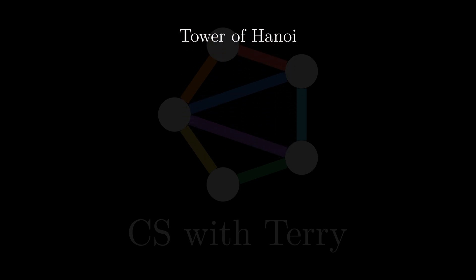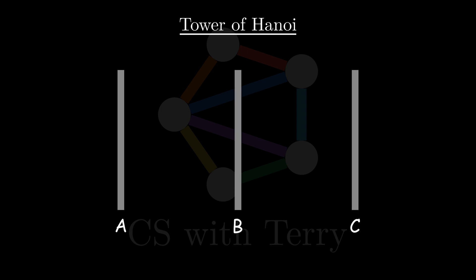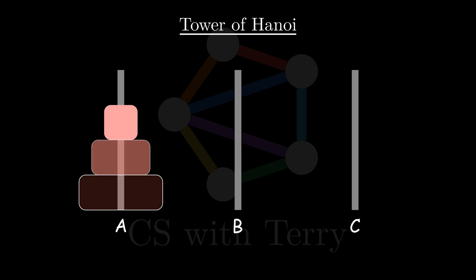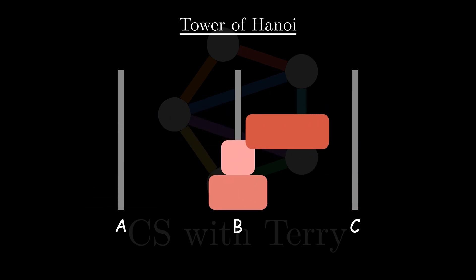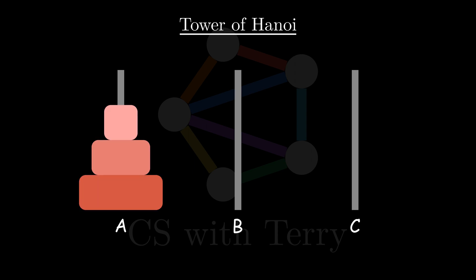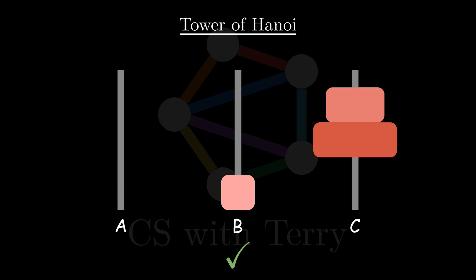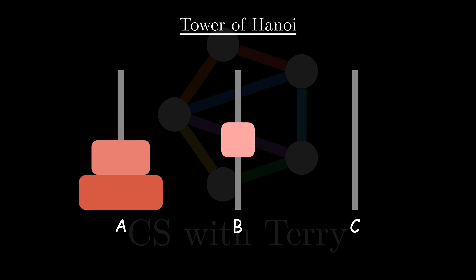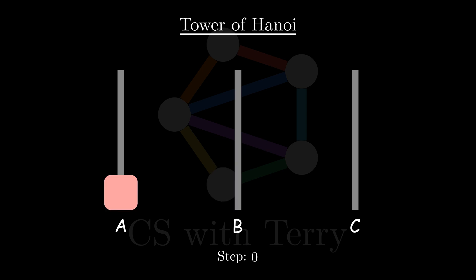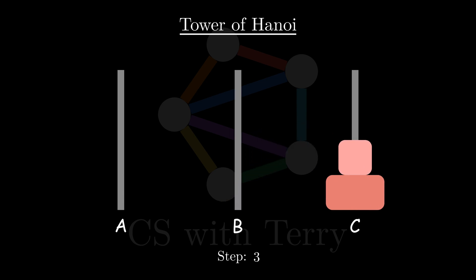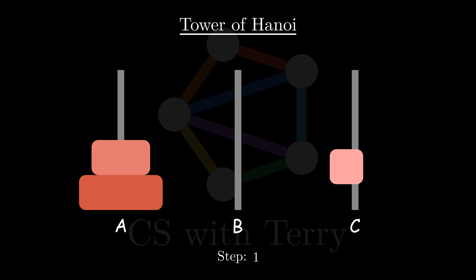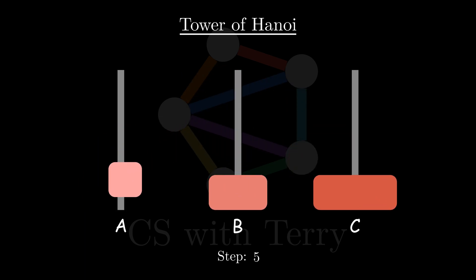Next, let's take a look at a classic recursion problem: the Tower of Hanoi. In this problem, there are three pegs A, B, and C. There are N discs on peg A, and the size of the disks increases from top to bottom. Our goal is to move these N discs to peg C. There are two restrictions: one, we can only move one disk at a time; two, a larger disk cannot be placed on top of a smaller one. When there is only one disk, we can simply move it to C. When there are two disks, we move the smaller disk to B first, then move the larger disk to C, and finally move the smaller disk from B to C. When there are three disks, the problem becomes a bit harder, but through simple trial and error we can solve it.